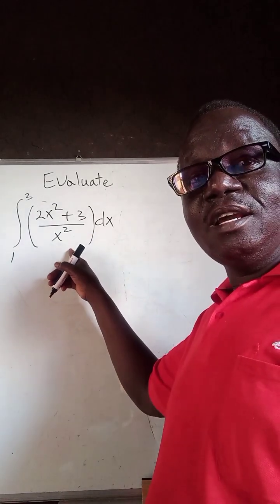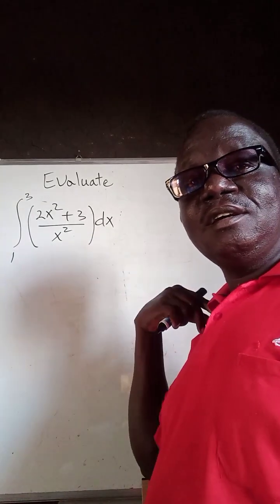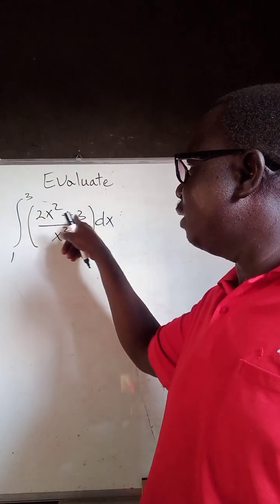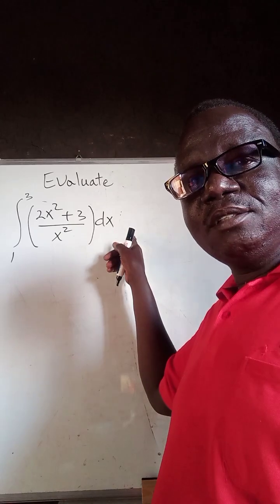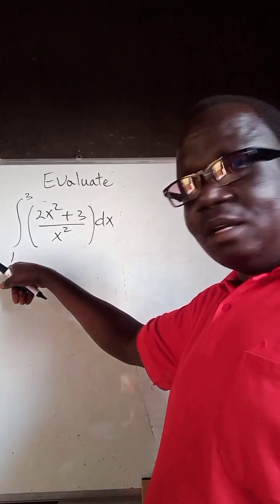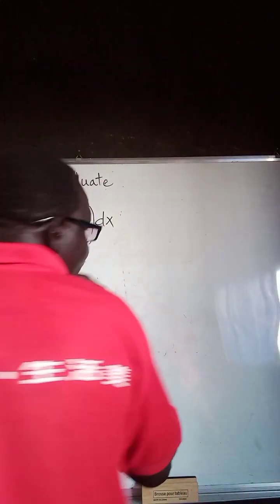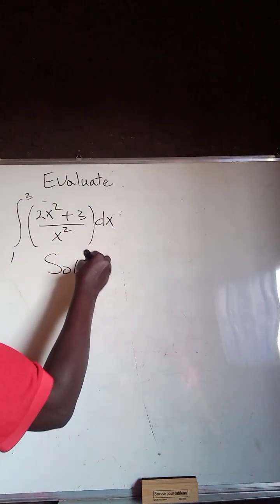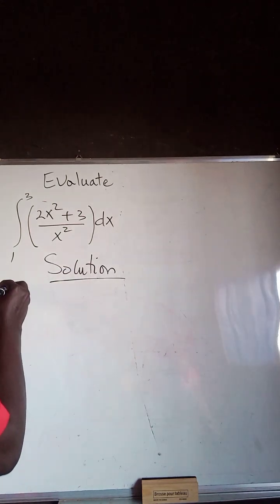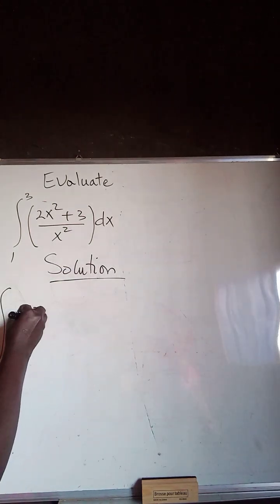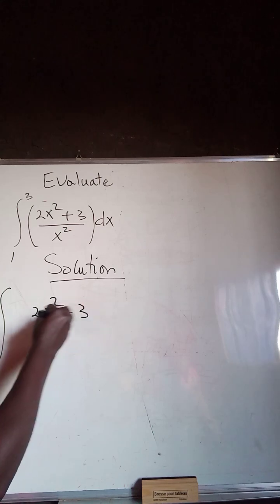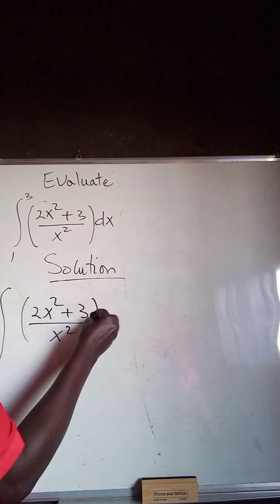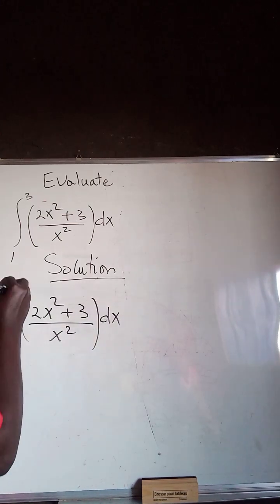We are given a question: evaluate the definite integral of 2x squared plus 3 divided by x squared, with respect to x, from 1 to 3. This question is very simple. Solution: the definite integral of 2x squared plus 3 divided by x squared, with respect to x, evaluated from 1 to 3.